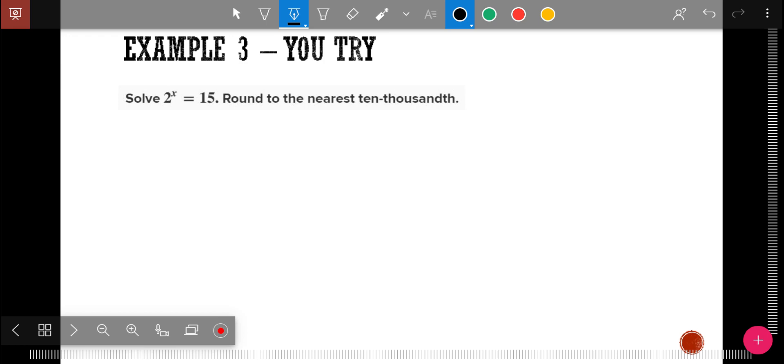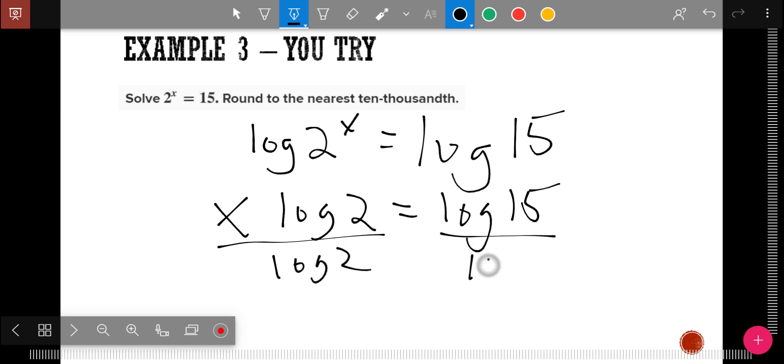You try. What do you have to do first to both sides to move the x, to get the x off being the exponent? What do you have to do to both sides? Hopefully you knew you had to log both sides. And so x goes out front. And divide both sides by log base 2. And then take your calculator. What is log 15 divided by log 2? Hopefully you've got 3.9069.